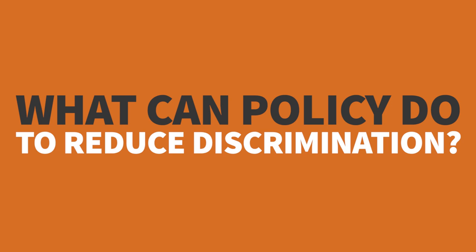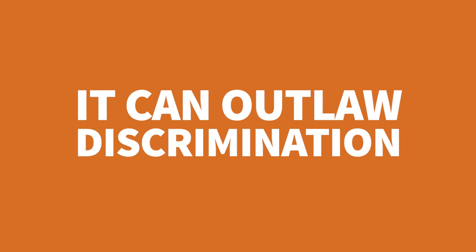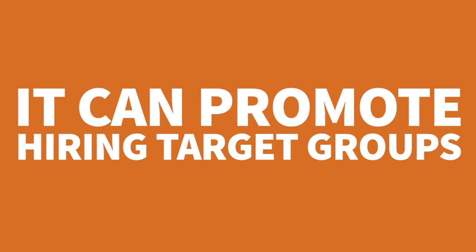If discrimination does occur, what can policy do? There are roughly two kinds of things. Policy can outlaw discrimination in hiring, promotion, and salaries, or it could adopt affirmative action policies that affirmatively push employers to have a certain fraction of employees be African American or women—rather than just punishing employers who specifically discriminated against a particular person, requiring evidence that you are actively trying to hire minorities. Those might initially sound like two different policies, but I want to argue they're closely related and we should think about them together.